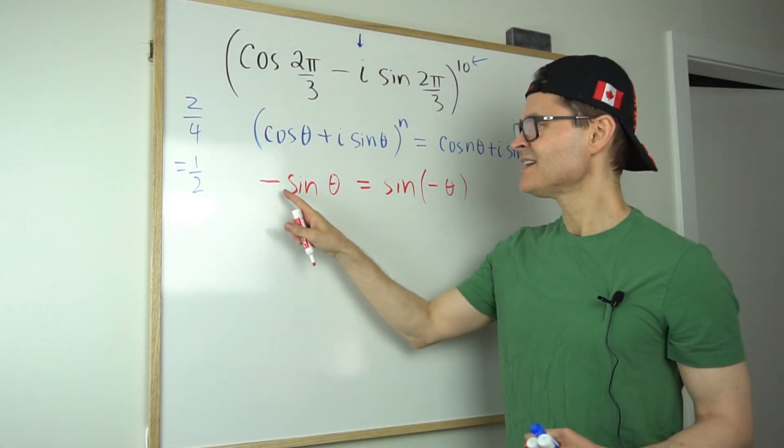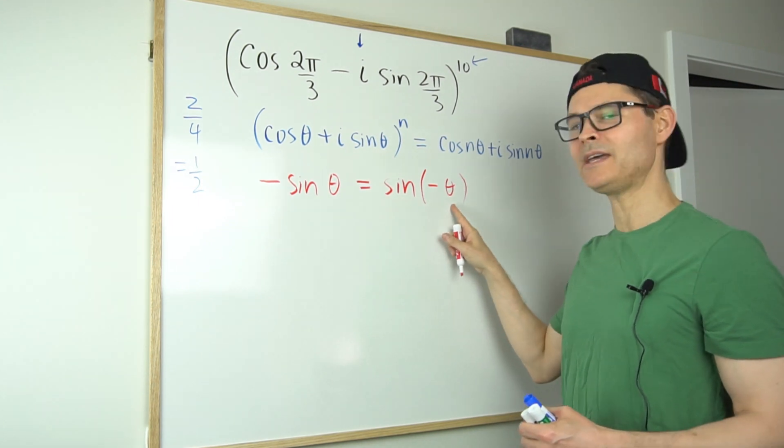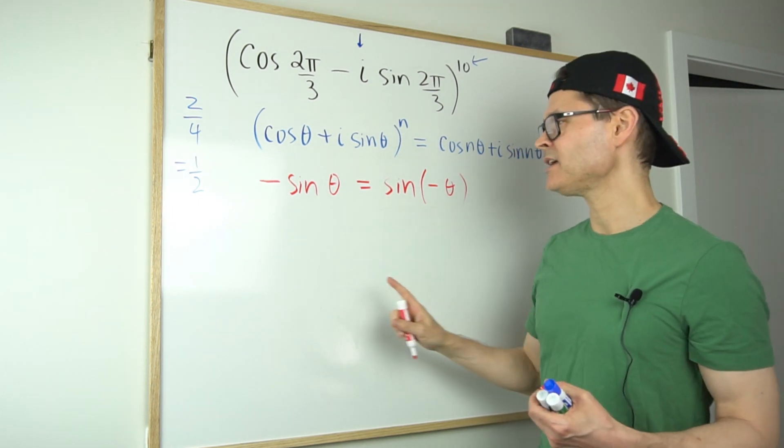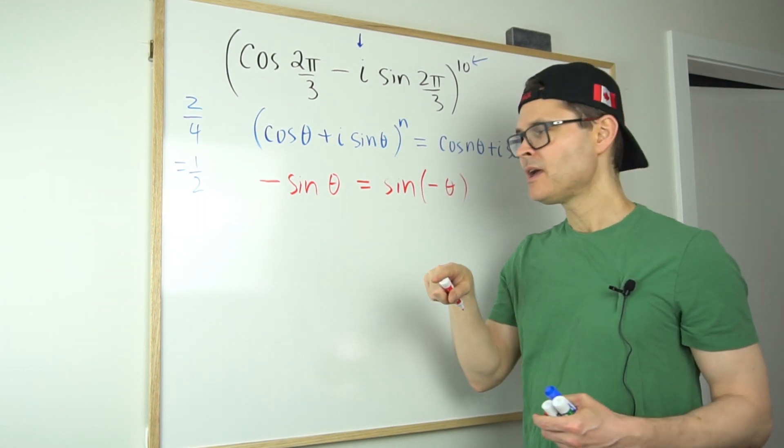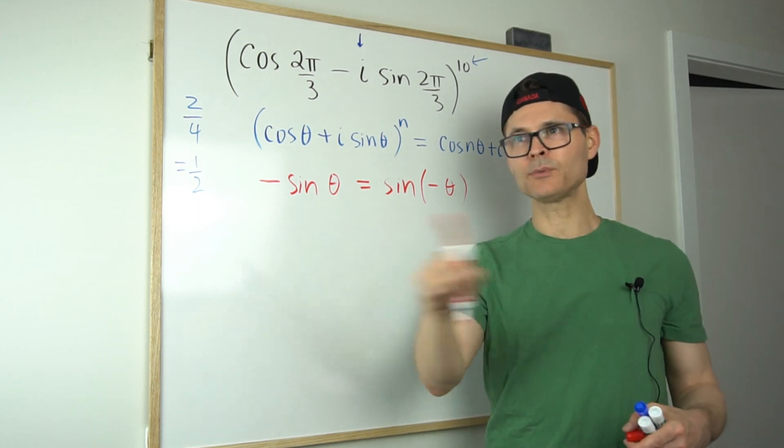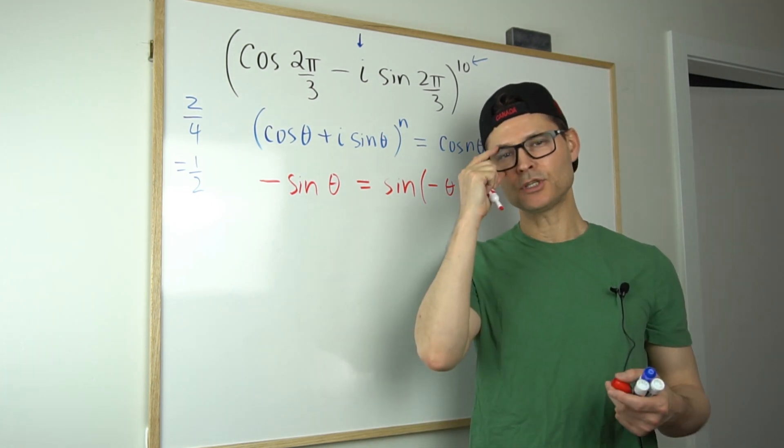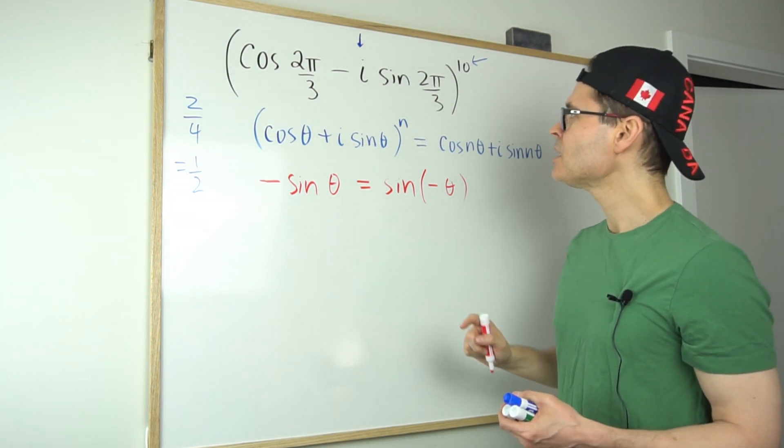So you can take negative sine, and that's going to be equal to sine of negative theta. Basically, what we're saying here is that if you were to vertically reflect the sine wave, and someone else on their page horizontally reflected it, you'd get the same image. So this is something that we can use for here.